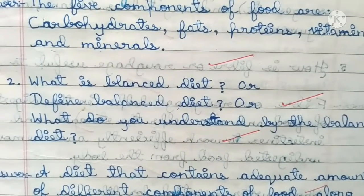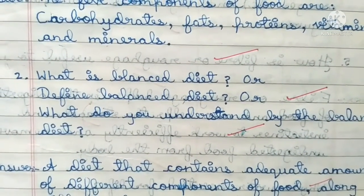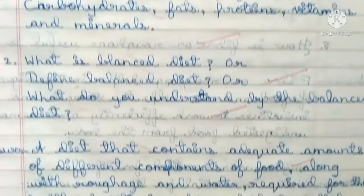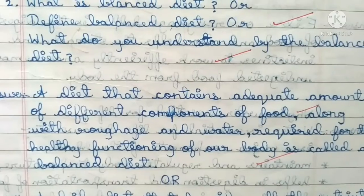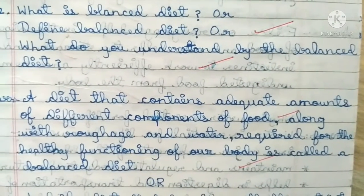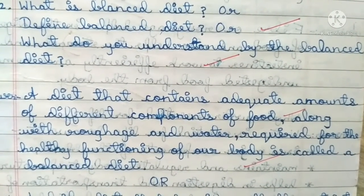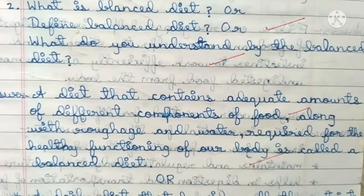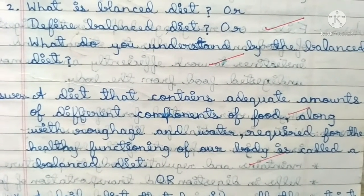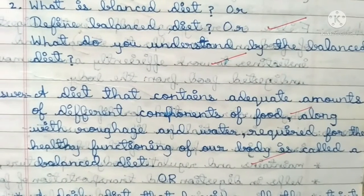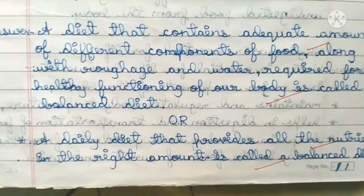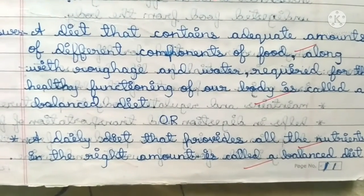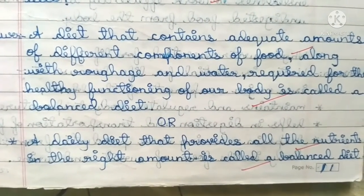What is a balanced diet? Or define balanced diet. Answer: A diet that contains adequate amounts of different components of food along with roughage and water required for the healthy functioning of our body is called a balanced diet. Or, a daily diet that provides all the nutrients in the right amount is called a balanced diet.